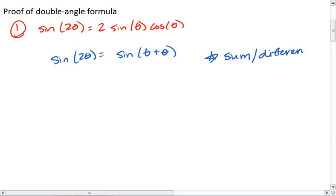So we can use the sum and difference formulas. We find then that sine of theta plus theta equals sine of theta cosine theta plus cosine theta sine theta.